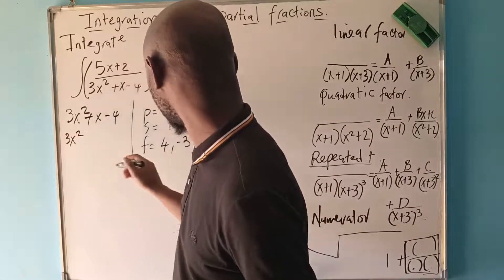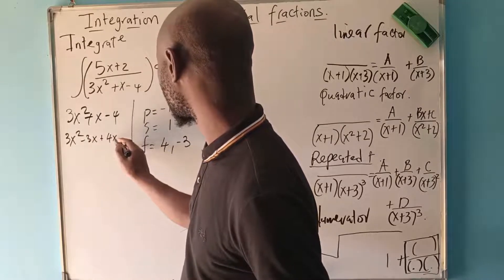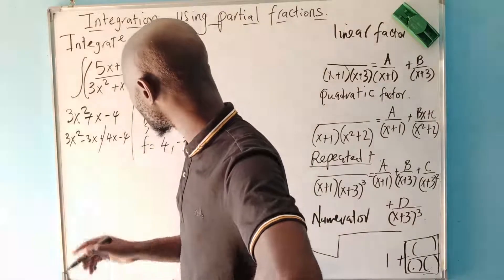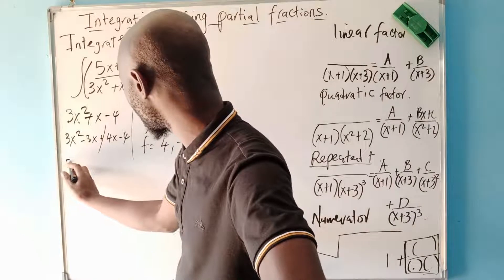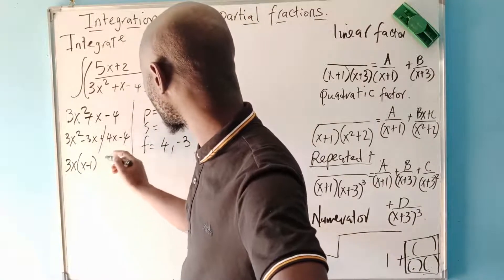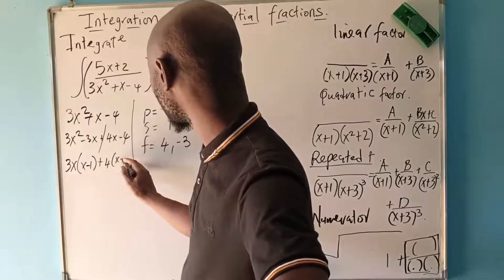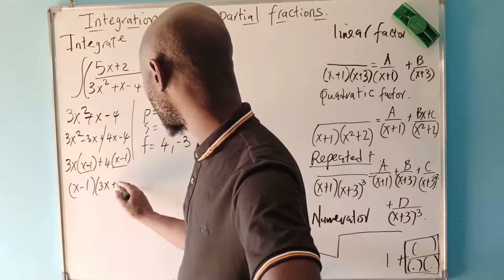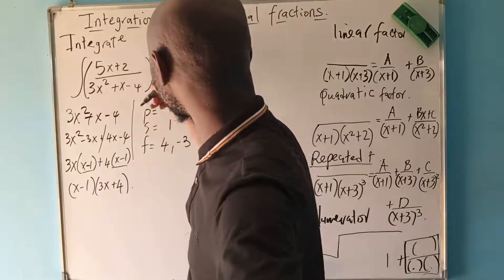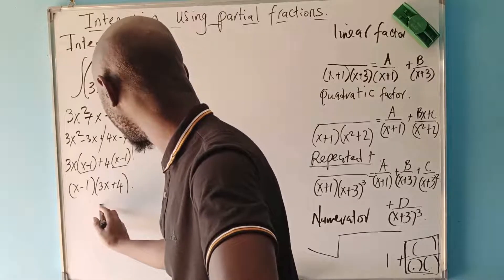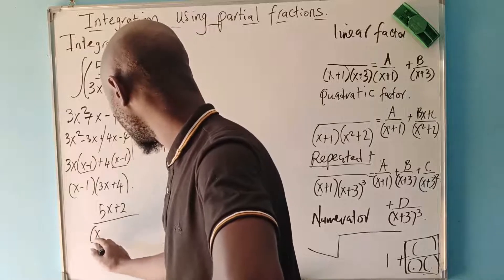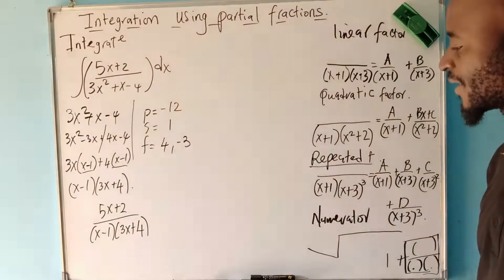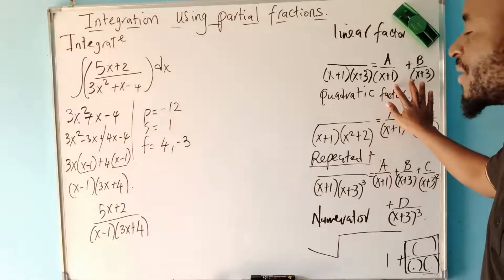We now factorize by grouping: group the first two and the last two terms. We factor out 3x from the first group to get 3x times x minus 1, and factor out 4 from the second group to get 4 times x minus 1. Since x minus 1 is common, we factor it out to get x minus 1 times 3x plus 4. We can clearly see that we have linear factors.